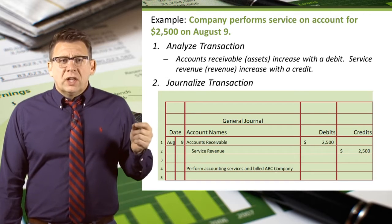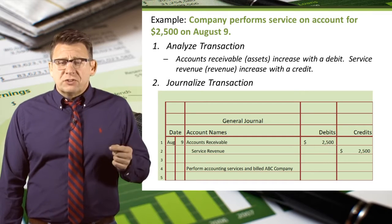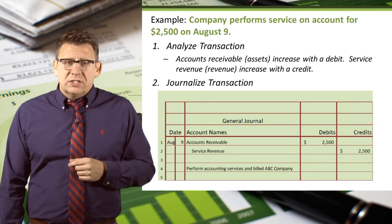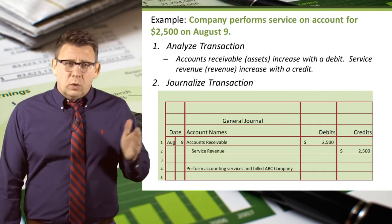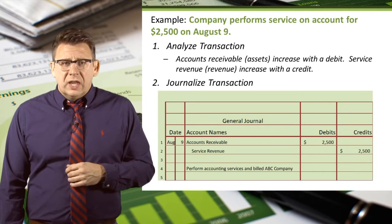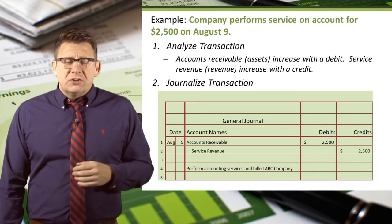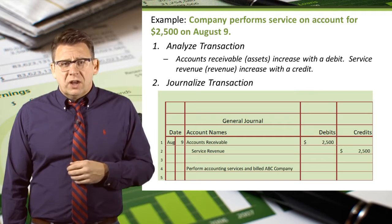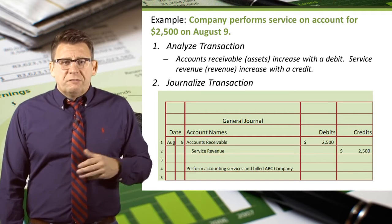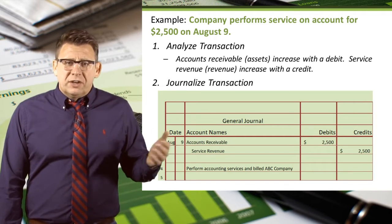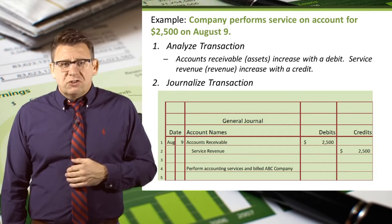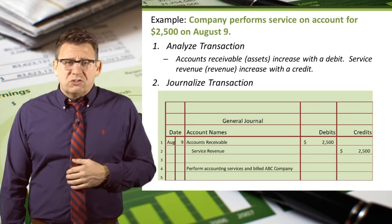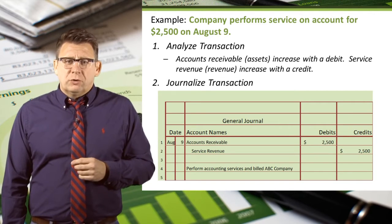Next we'll enter service revenue as the credit account. We'll want to indent the credit, and then enter $2,500 in the credit column. Finally we would enter the transaction description and we're done — we've entered this transaction into the general journal.